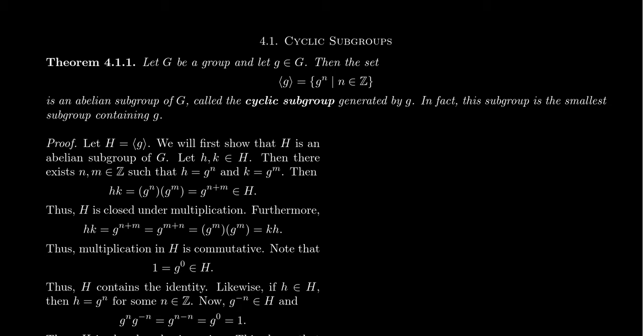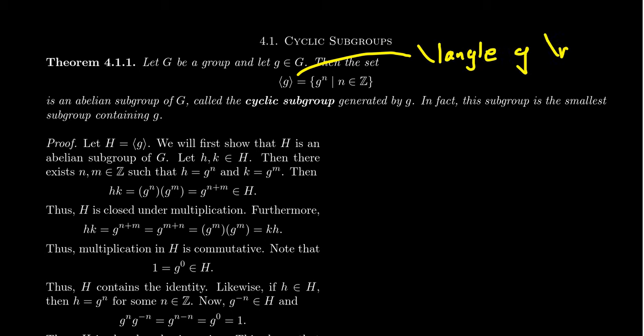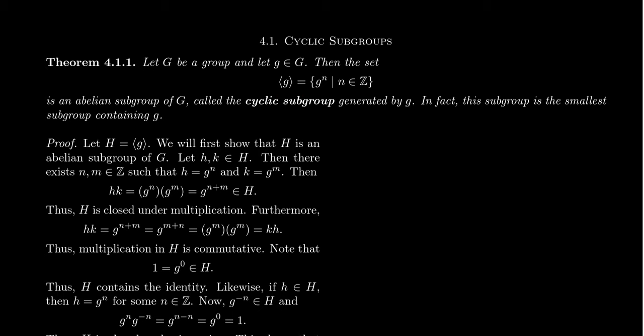What is a cyclic subgroup? It turns out that oftentimes a subgroup will depend entirely on just a single element of the group. That is, knowing that particular element will allow us to compute any other element in the subgroup. So suppose we have a group G, and let's take an element inside of the group, also called g (lowercase). We then denote the set ⟨g⟩ — in LaTeX, \langle g \rangle — and don't use the less than or greater than symbols. This set is defined to be all of the integer powers of g.